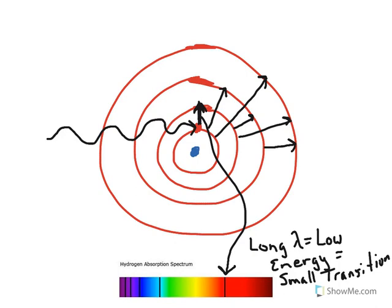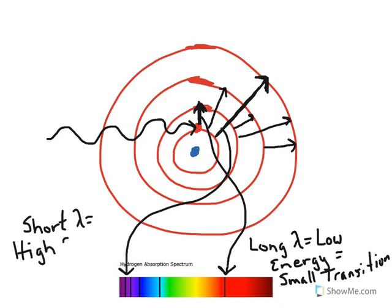If the electron instead travels through a large transition, that will correspond to high energy, which would be a short wavelength. So short wavelength is high energy, and that's a large transition.